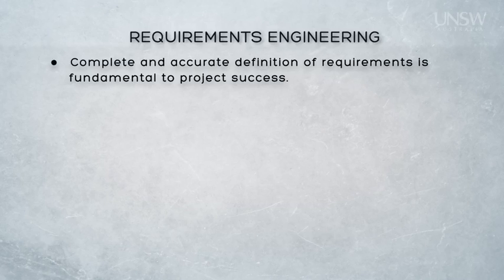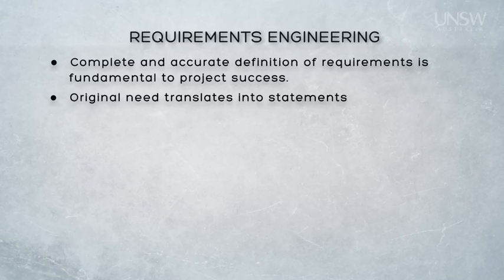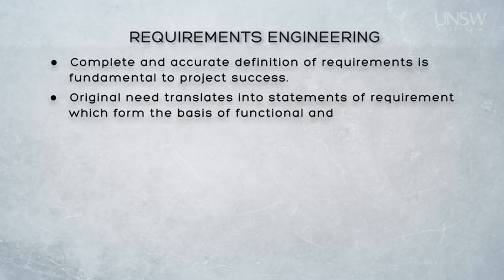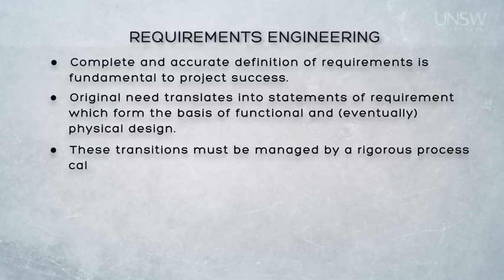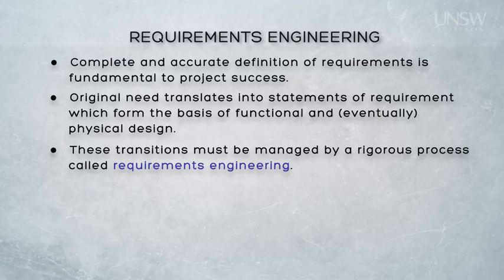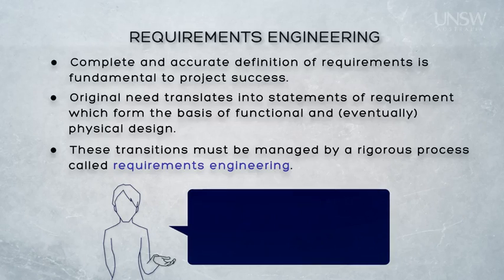The life cycle of the system began with business needs, which were then translated into a large number of statements of requirement forming the basis of the logical design, and subsequently elaborated further to form the physical design. These transitions from business needs to stakeholder needs and requirements to system requirements are managed by a very formal process called requirements engineering, and its aim is to ensure that all the requirements have been included, which means that irrelevant requirements are excluded.